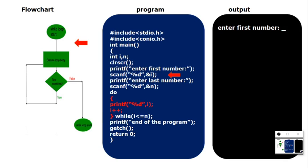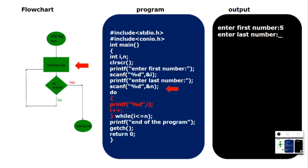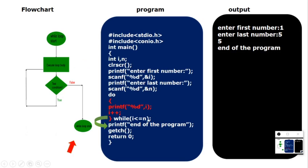Now let's do the same experiment as with while loop — first number as 5 (highest) and last number as 1 (lowest). It prints 5 immediately — see, it's not checking the condition, it's printing first. Remember the note: the body of the loop executes at least once irrespective of condition. After printing, i becomes 6, checks 6 <= 1 — condition fails, exits. So even though first > last, do-while printed once.